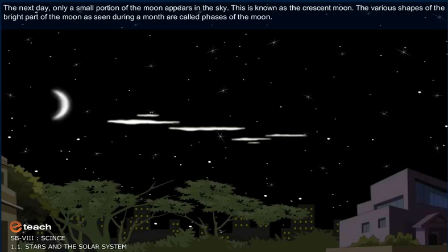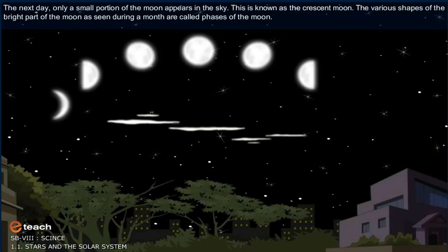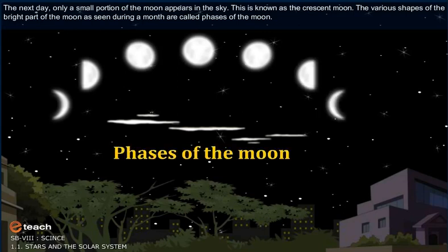The next day, only a small portion of the moon appears in the sky. This is known as the crescent moon. The various shapes of the bright part of the moon as seen during a month are called phases of the moon.